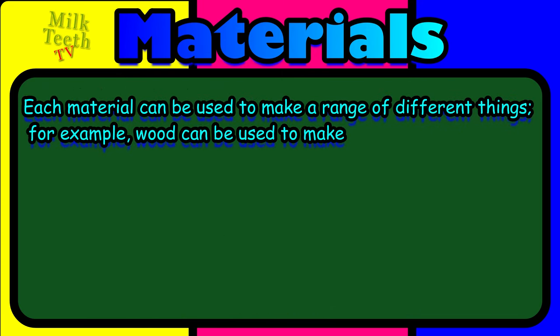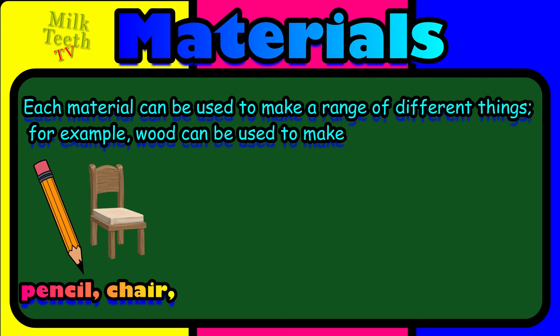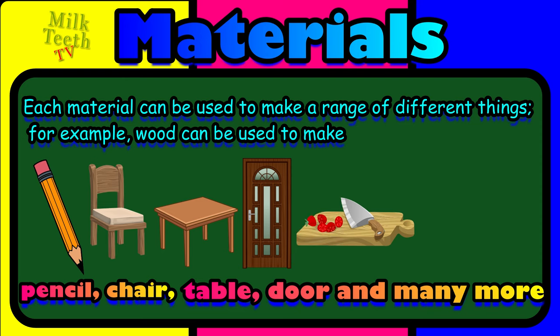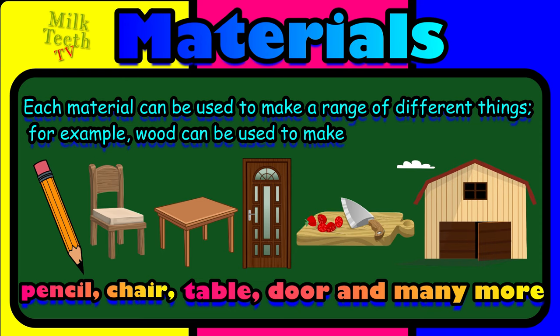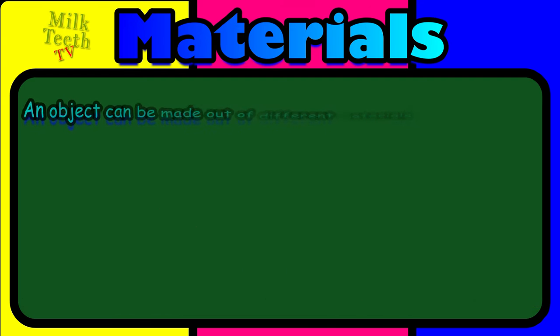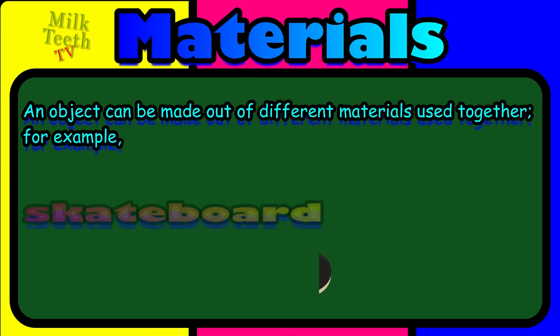Each material can be used to make a range of different things. For example, wood can be used to make different things like a pencil or a chair. Can you think of something else that is made out of wood? A table, a door, a chopping board, and even our house.